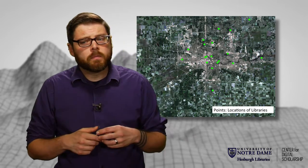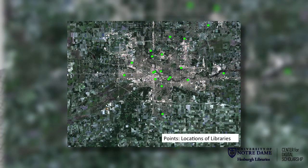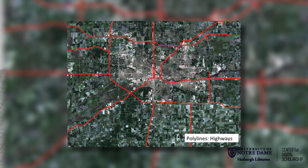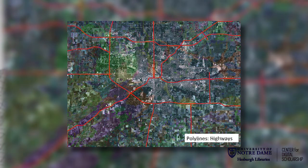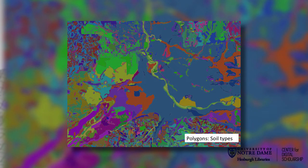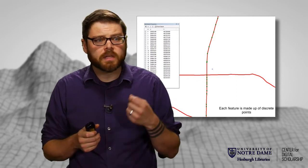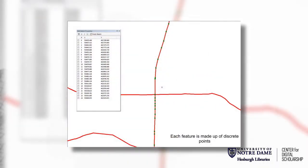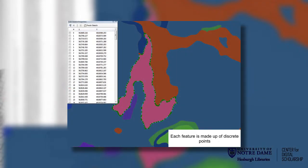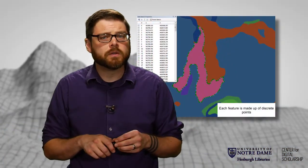Vector data can be three different types. We have points — in this image, we're seeing the locations of libraries in South Bend. It can also be lines, the relation of points together into one feature, in this case highways. Or it can be areas — in this case, different types of soil throughout the region. Regardless, each feature is an entity of itself. If it's a point feature type, each point has a record in the table. If it's a polyline feature, there might be lots of vertices making up that feature, but it's the whole line that has one record in the attribute table. The same is true for polygons — a very complicated polygon might have lots of points making it up, but the record in the table itself is just one feature.